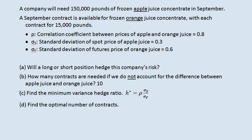Now on to the tricky stuff. These are not the same thing, so we have to figure out what to do here. Find the minimum variance hedge ratio — there is a formula. H star (H for hedge, star indicating the optimal amount) is equal to the Greek letter rho, which is used to symbolize correlation between two things. The correlation coefficient between the prices of apple juice and orange juice is 0.8. Correlation is a measure of how closely two things move together; it's a value between negative one and positive one, where positive one means they move exactly the same, zero means there is no pattern at all, and negative one means they move exactly opposite. So 0.8 means that they move reasonably close together, which makes it a decent cross hedge.